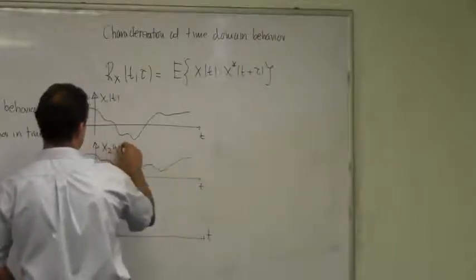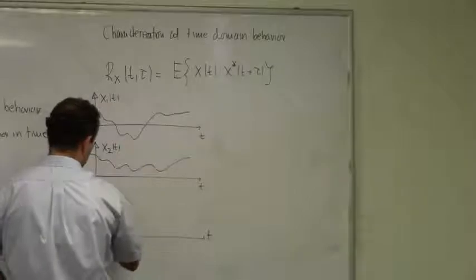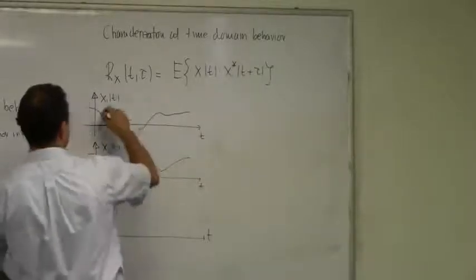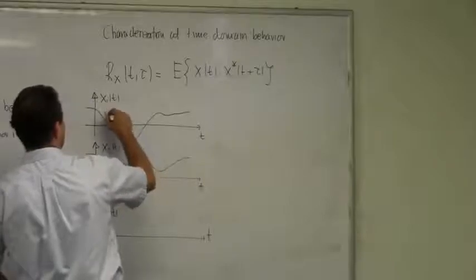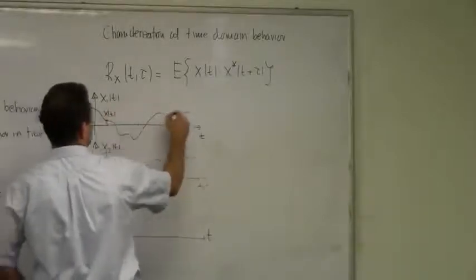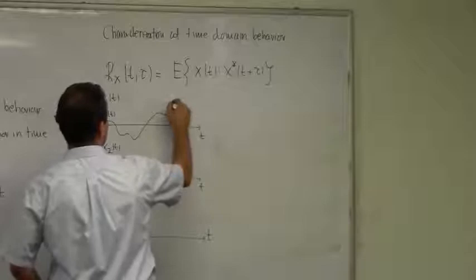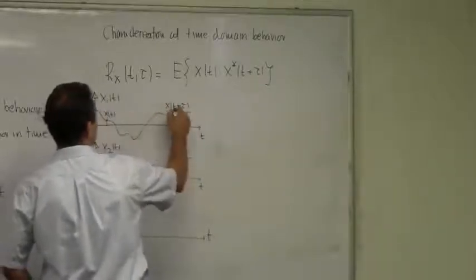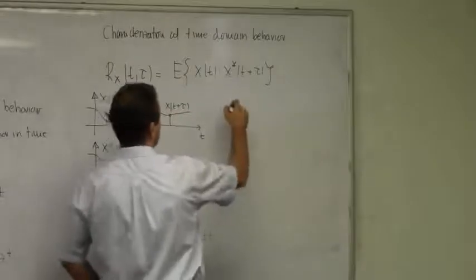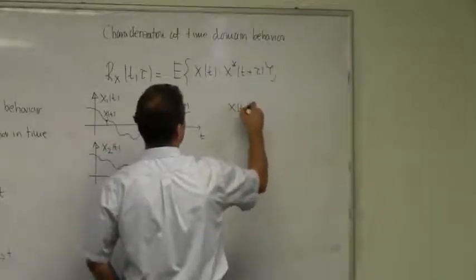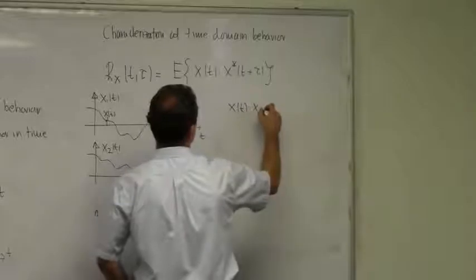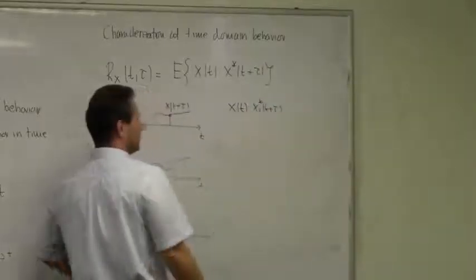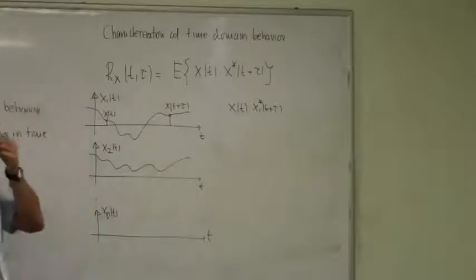This is x1(t), x2(t), xn(t) and so on. I look at the value here, this is x(t), this here is x(t + τ), x1(t), x1(t + τ).